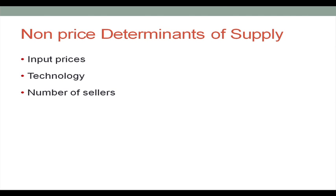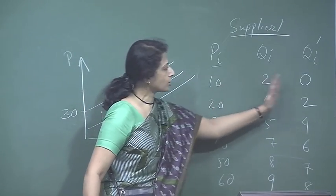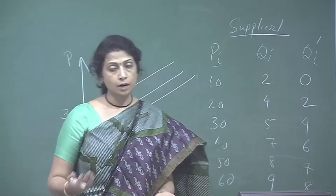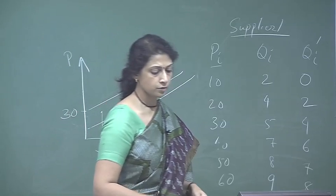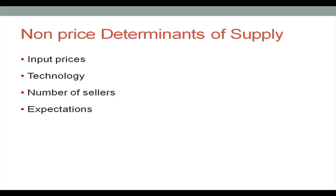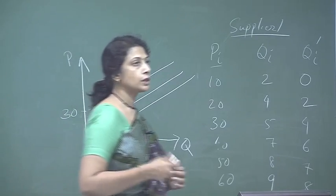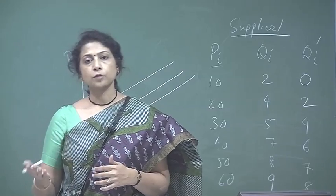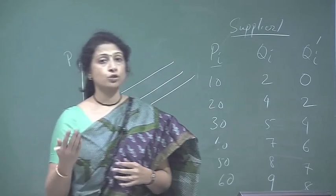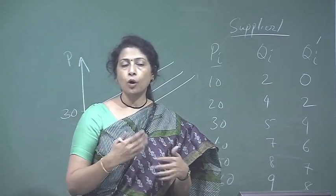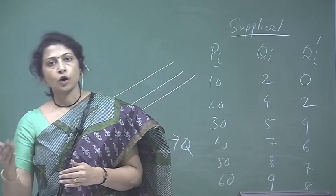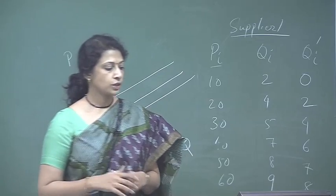Another non-price determinant is the number of sellers. If more sellers enter the market, the total market supply increases and the supply curve shifts right; if sellers quit the market, the supply curve shifts left. Similar to the demand curve, the supply curve is also influenced by expectations. For example, if oil companies expect oil prices to rise significantly in the future, they may hold inventory and reduce supply today to sell at a higher price later.